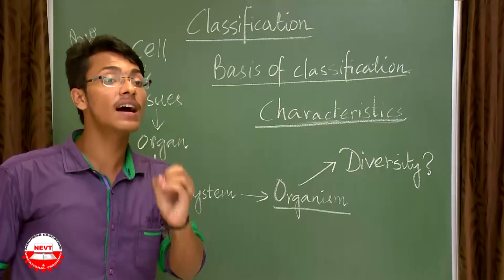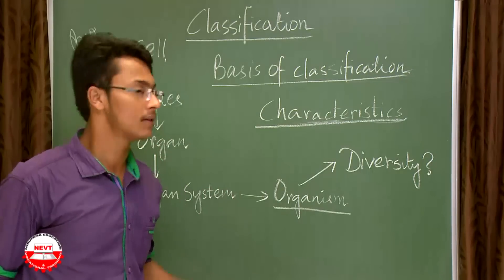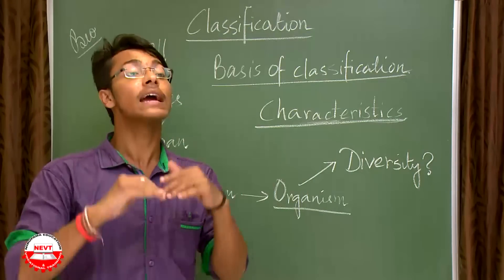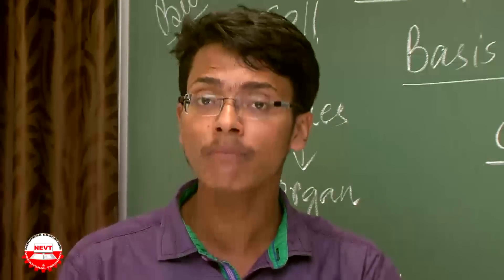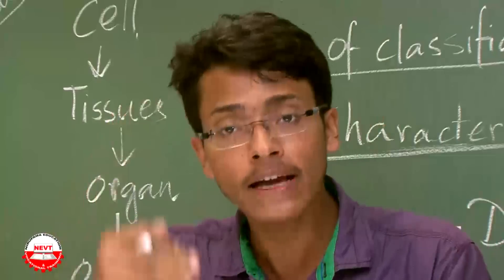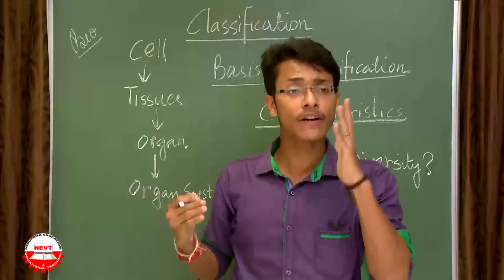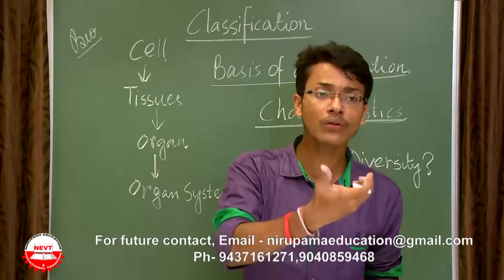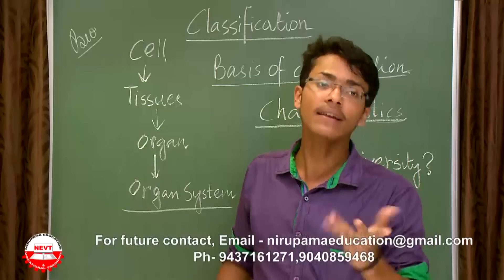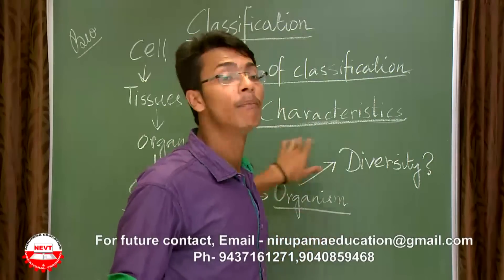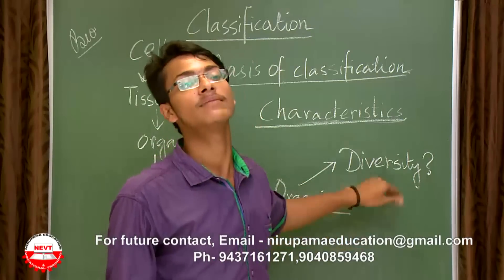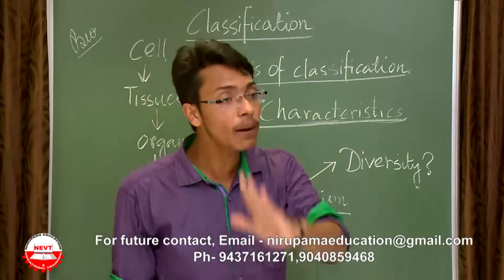The first thing is to reach the lowest category of classification: cells — the very starting and fundamental unit of life, already read in chapter five. Then you have tissues, read in chapter six. Tissues are an accumulation of cells. When many tissues combine together, they form an organ. When organs of a particular system combine — for example, in the digestive system, the mouth, stomach, and pancreas — they constitute an organ system. Many organ systems comprise the final organism, and organism diversity is what we are going to learn in this chapter.